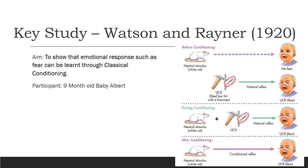During the conditioning, a white rat was presented to little Albert and every time he tried to reach for it, the loud noise was made. So the neutral stimulus alongside the unconditioned stimulus gained the unconditioned response of fear. After multiple times of this happening, the neutral stimulus of the rat became conditioned, and every time little Albert saw the white rat, he gained the conditioned response of crying. He had made an association between the white rat and the loud noise.